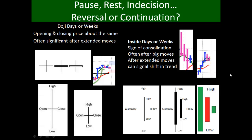Often dojis and inside days are much more significant after a long or extended move. They don't have a lot of predictive value about what direction they'll go — they usually just signal a pause or rest, a moment of indecision, and that can lead to either reversal or continuation. So you have to be attentive and you can't have a preconceived idea about what you expect it to do.